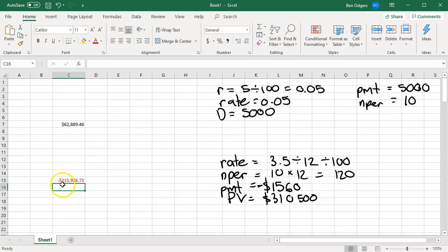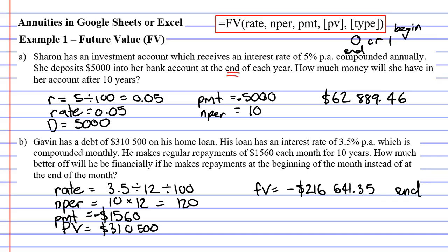We now have the amount negative $215,988.73. We'll copy this across now. FV equals negative $215,988.73, which happens when you put your repayment in at the beginning of the month. We can see that when he puts his repayment in at the beginning of the month, he's better off. He owes less money.